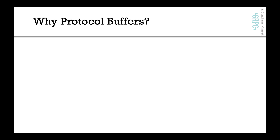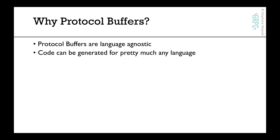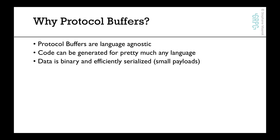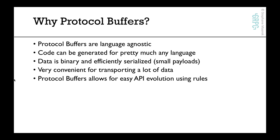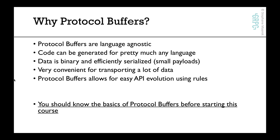Why do we use protocol buffers in this course? Protocol buffers are basically language agnostic — the code can be generated for pretty much any language. The data is binary and efficiently serialized, which is very convenient when transporting a lot of data in big data setups. It also allows you to easily evolve your API using some rules. Before starting this course, you should know the basics of protocol buffers, otherwise you're going to be completely lost.